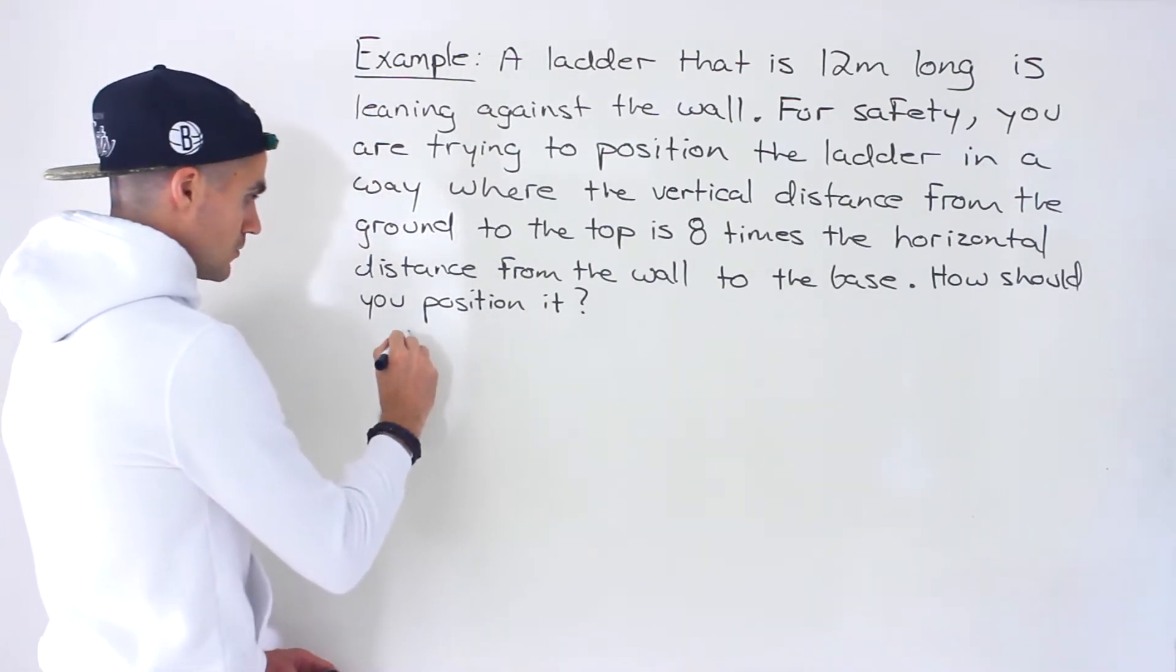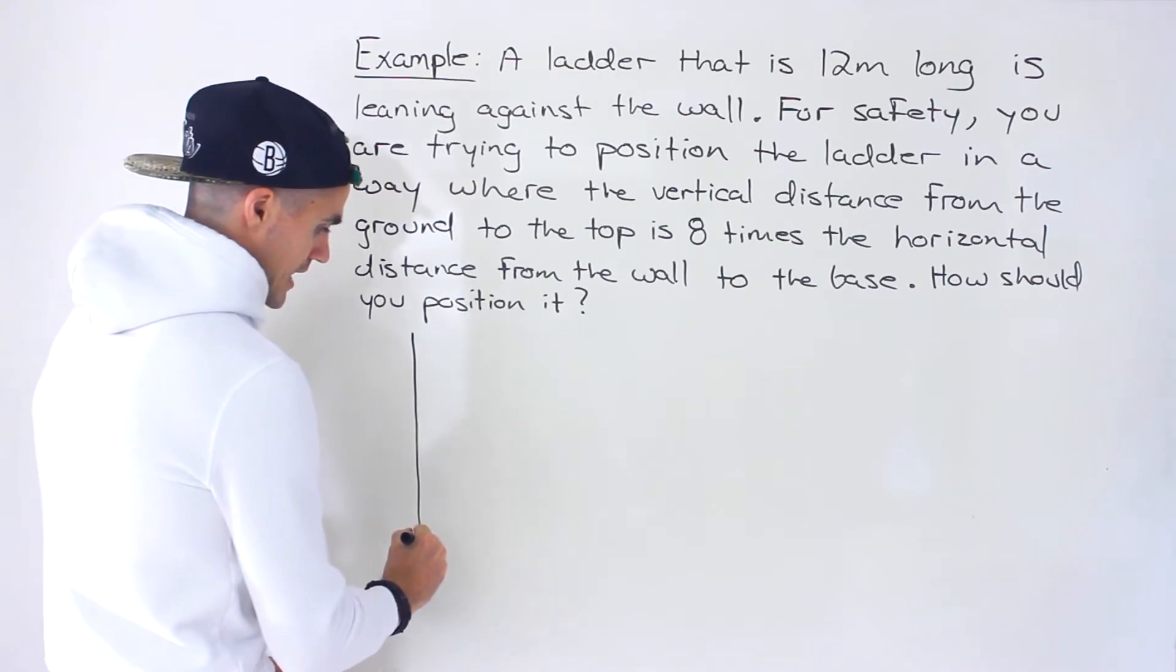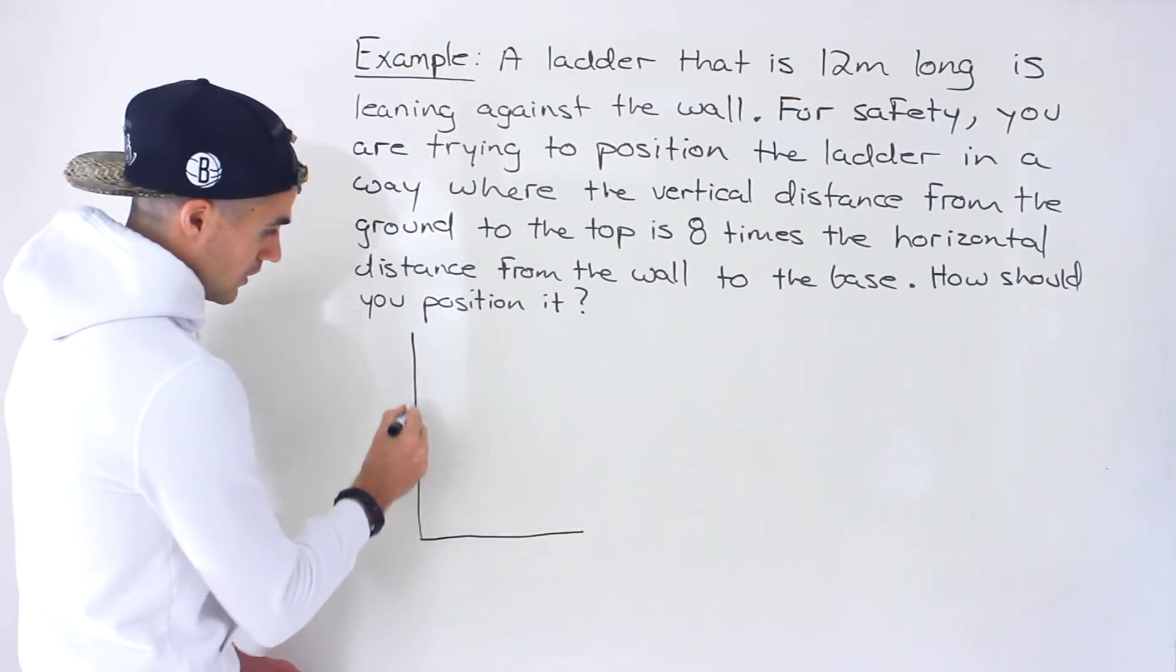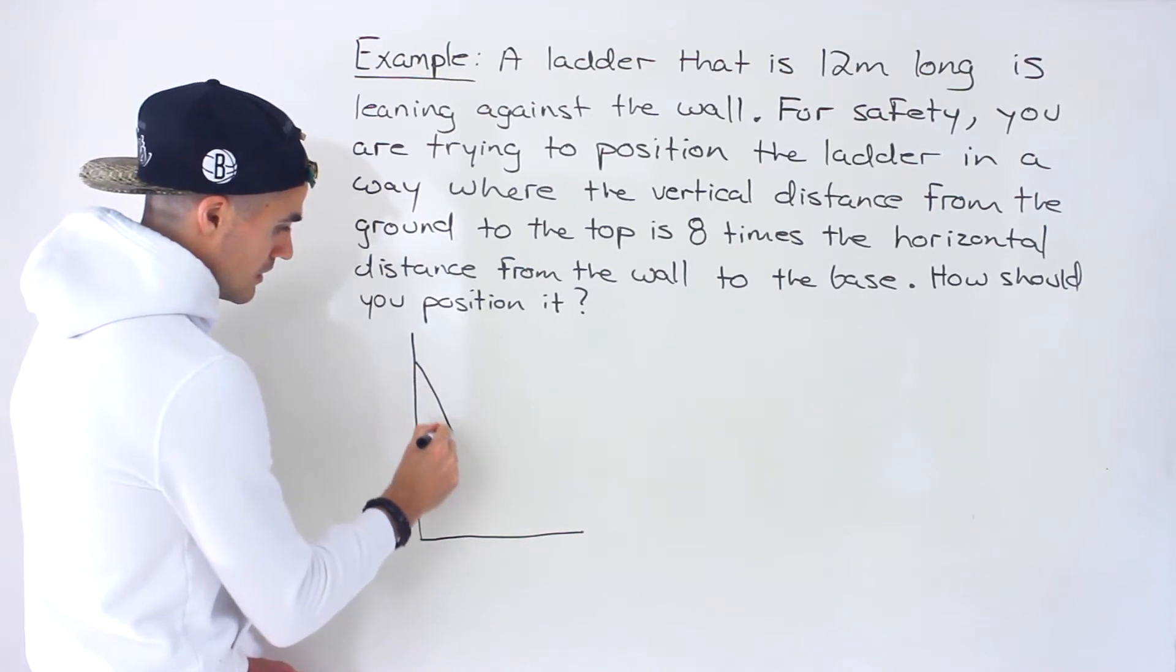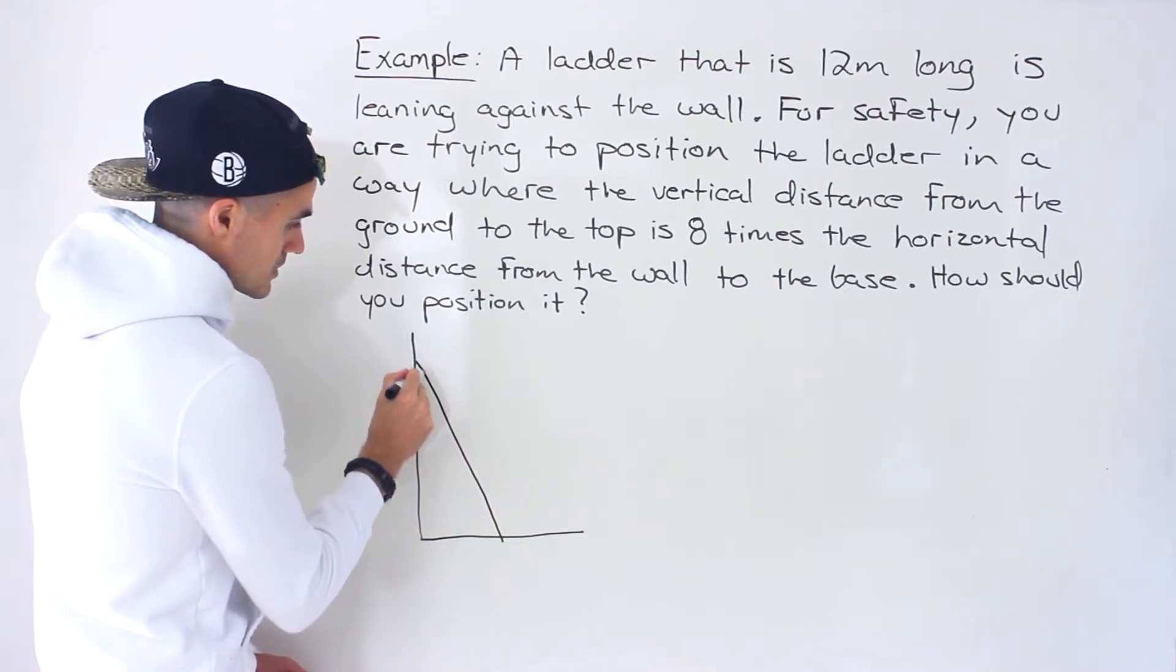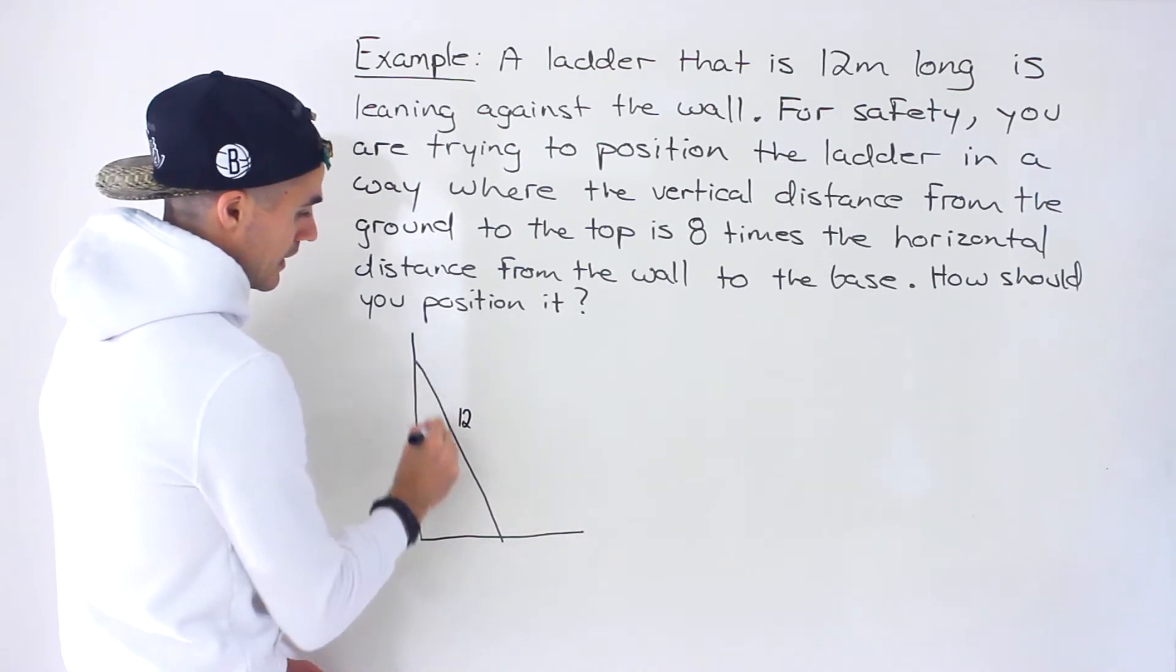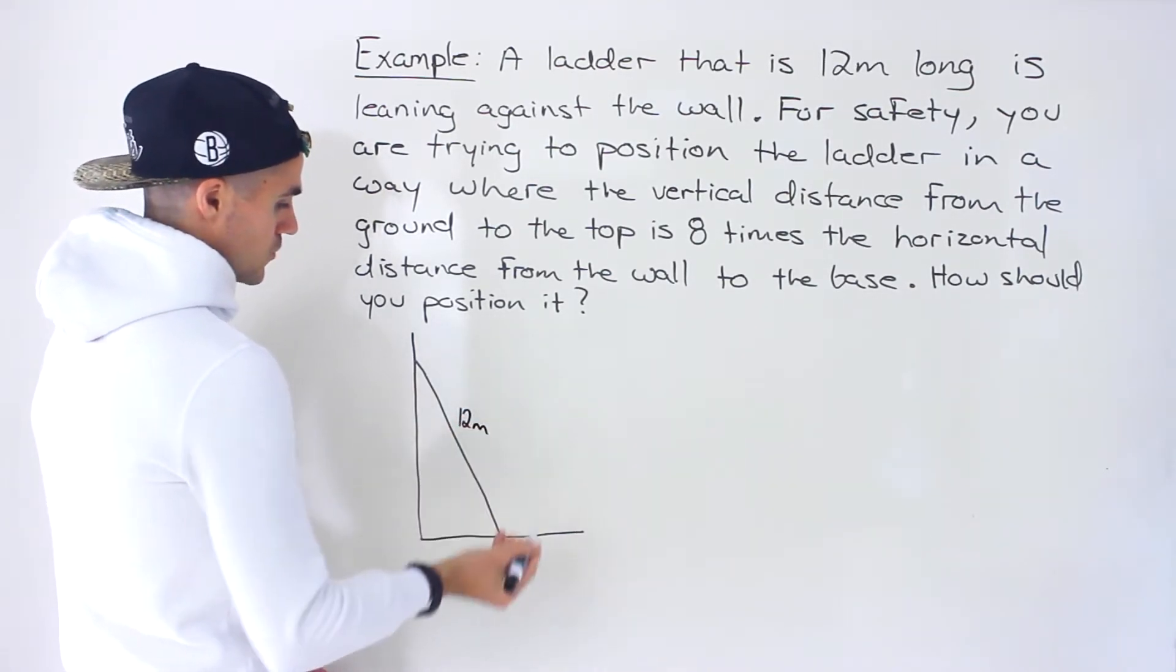To show this a little bit more clearly let's draw a diagram here. We have the ground right here, the wall here, and then we have a ladder that is leaning against the wall. We're told that the ladder is 12 meters long, so this length right here is 12 meters.